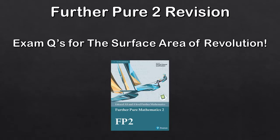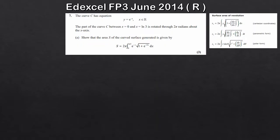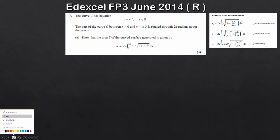Hey guys, welcome to another A-level Further Maths written video. Today we're carrying on with Further Pure 2, taking a look at basically the last actual topic in Further Pure 2, which is looking at the surface area of a revolution — essentially a continuation from arc length, just further integration. This first question is taken from one of the international papers, quite a nice easy question to get started, just to practice using the formulas.